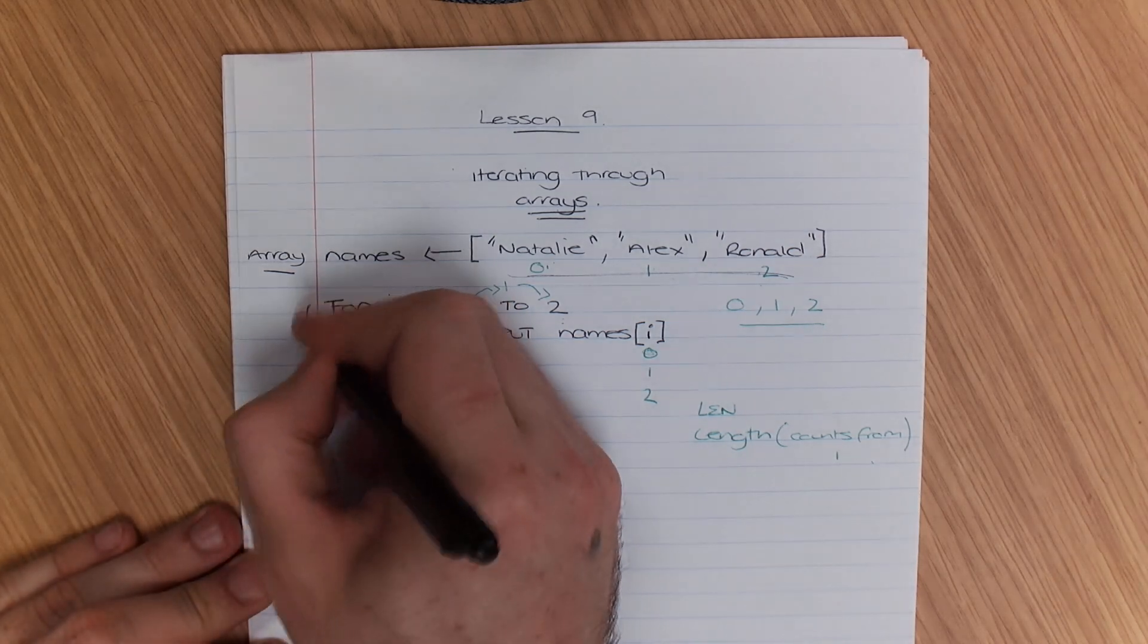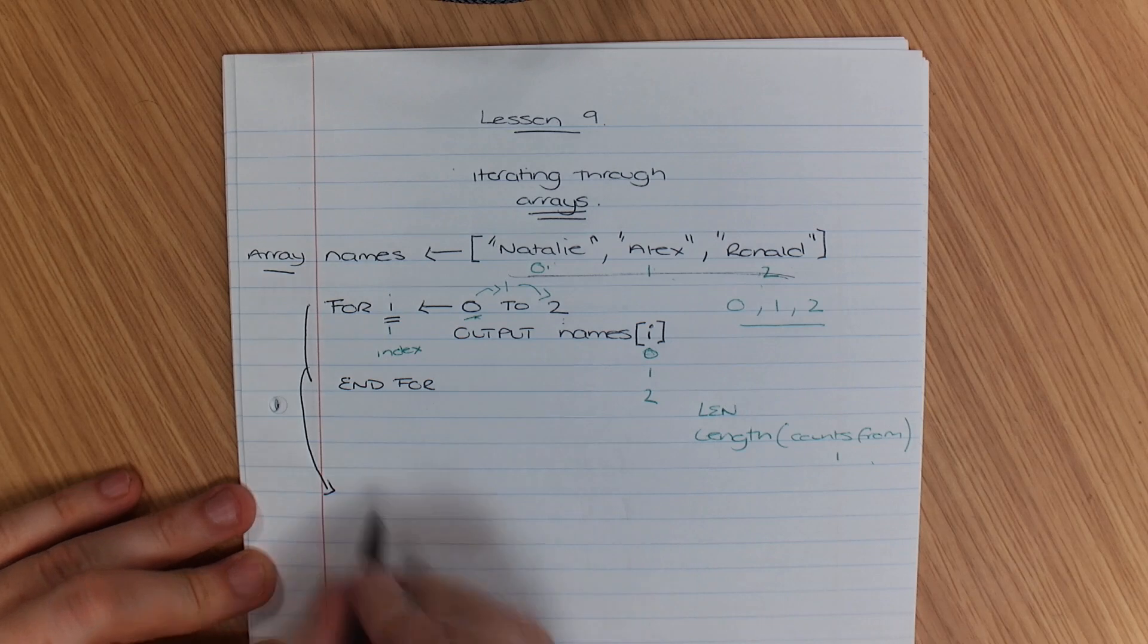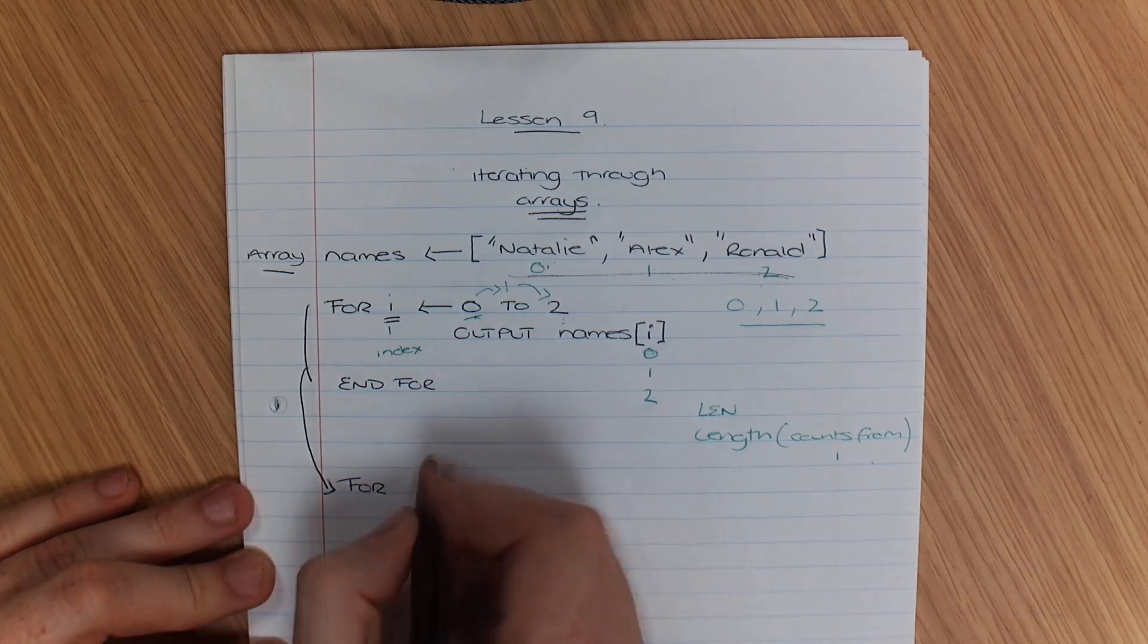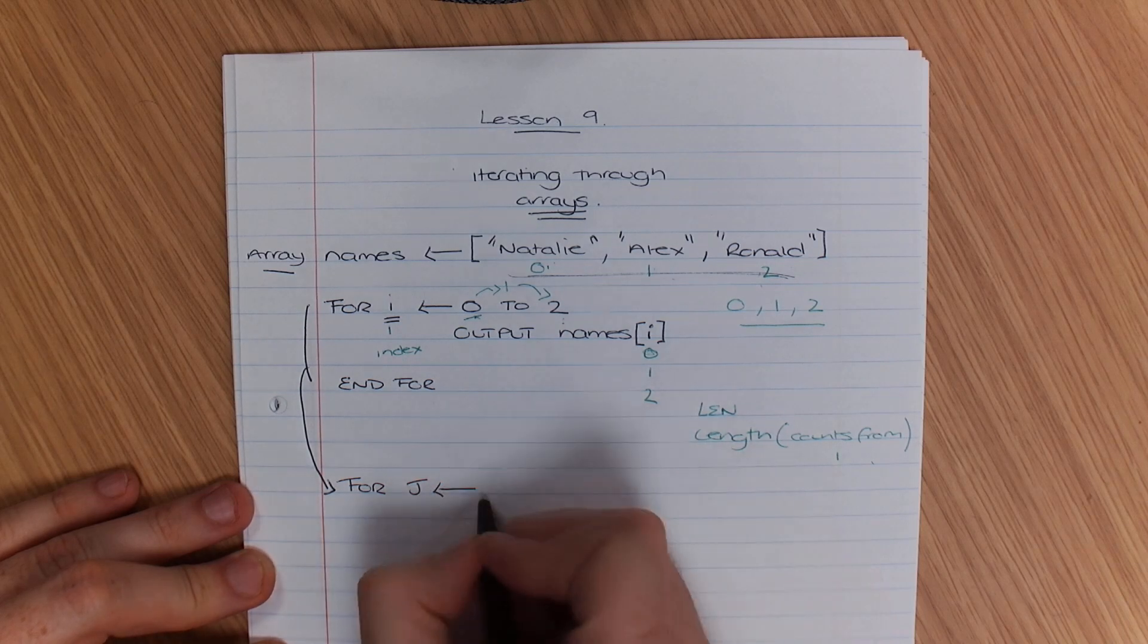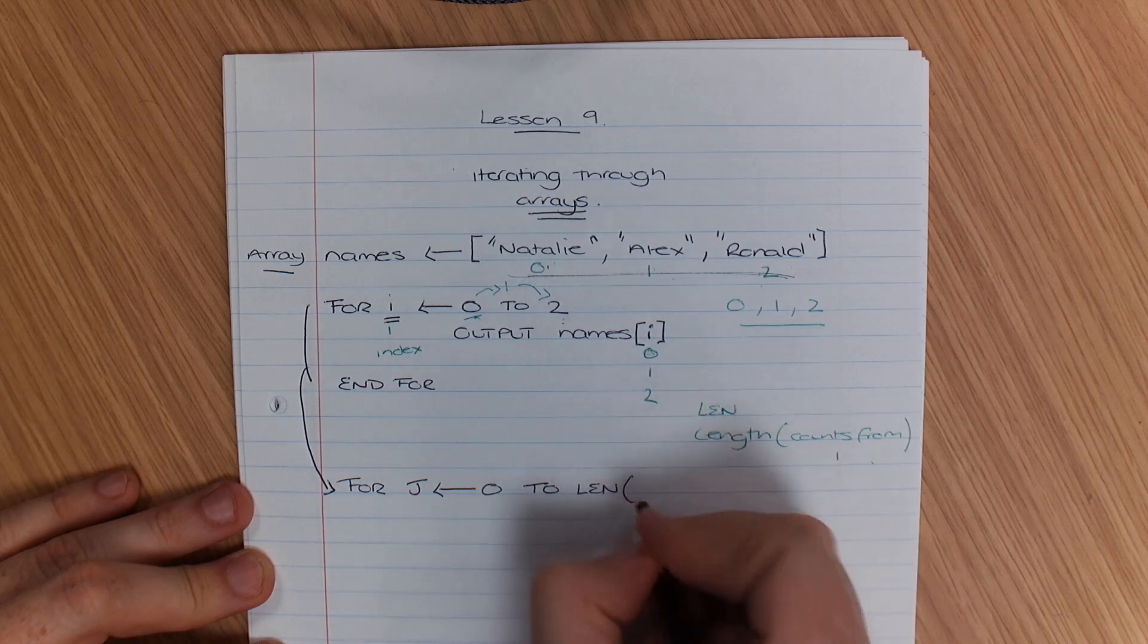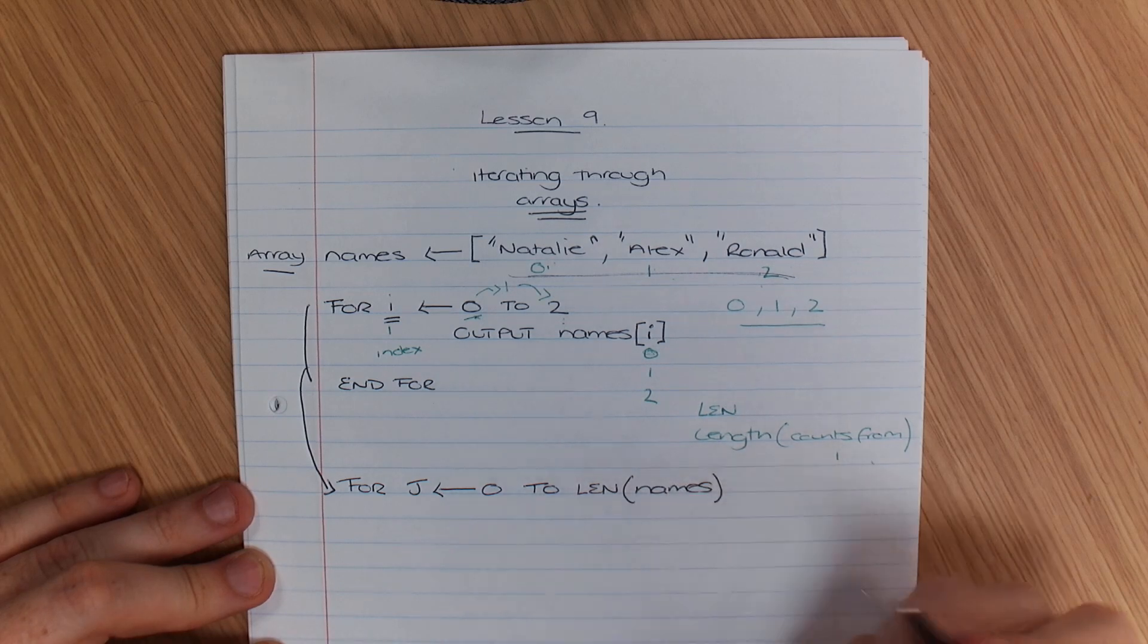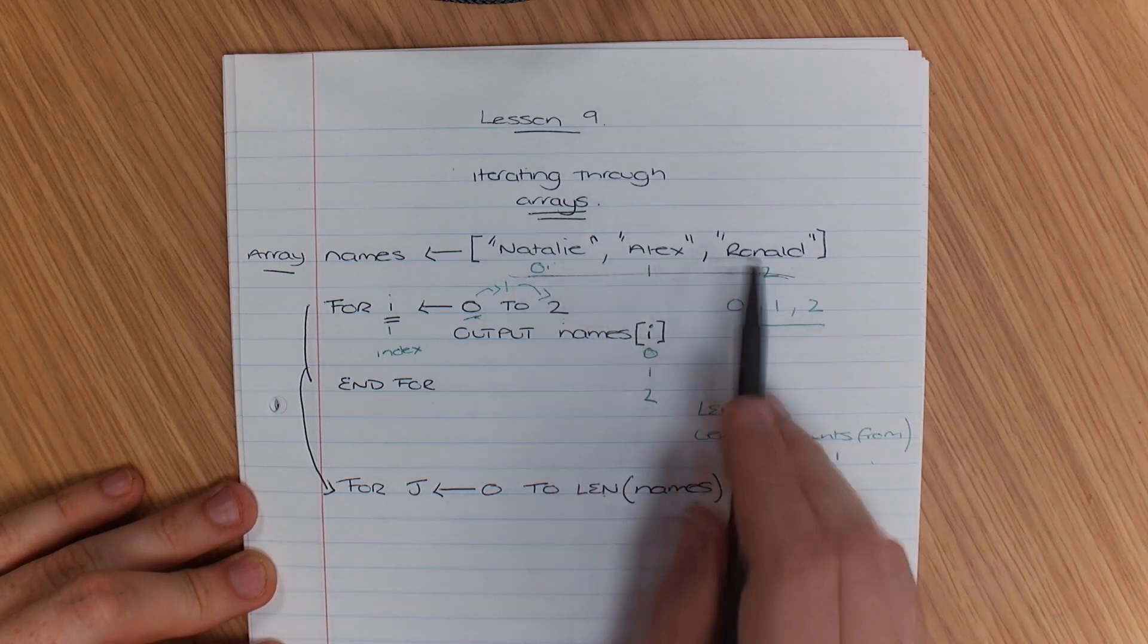So what I'm going to do is I'm going to do this little bit of code again, slightly different. So we're going to say for j is 0 to len of names. Now what that would do is get the length of the names, which is 1, 2, 3.